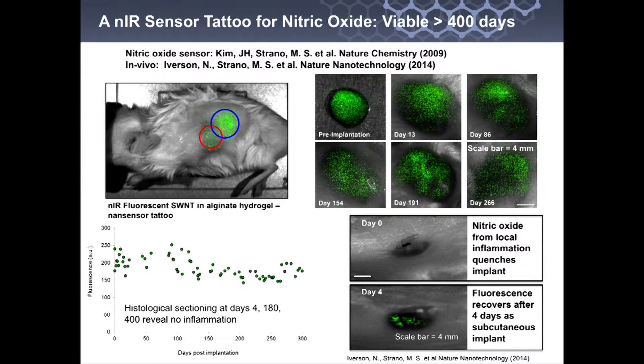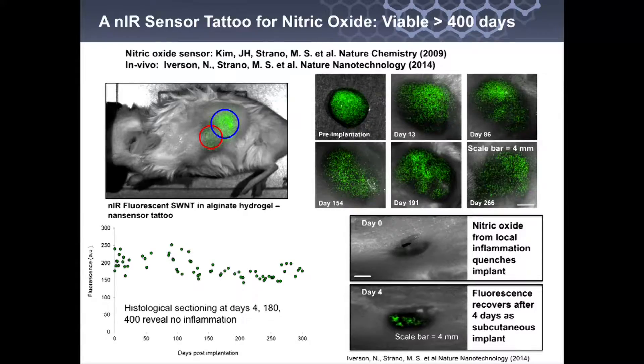At this point we have mice that spend their entire lives with these nanosensors in their peritoneal cavity or in the hind flank. We have very healthy diabetic mice. You can see that this operates for 400 days.